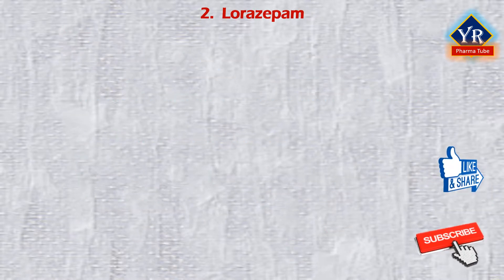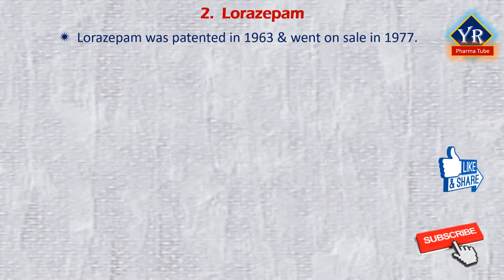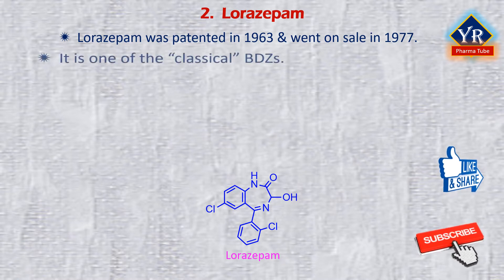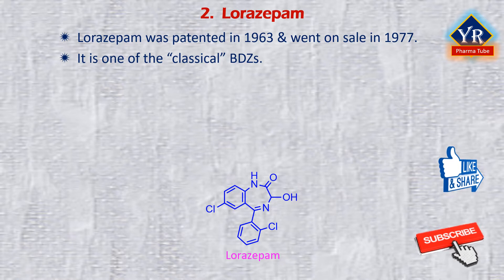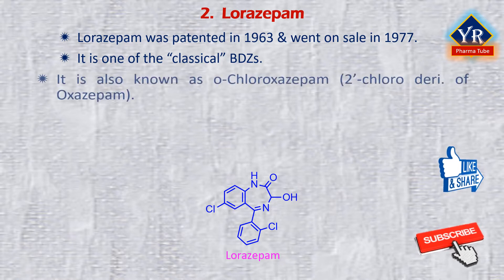The second drug is lorazepam. Lorazepam was patented in 1963 and went on sale in the US in 1977. It is one of the classical benzodiazepines — others include diazepam, clonazepam, oxazepam, nitrazepam, flurazepam, bromazepam, and chlorazepate.